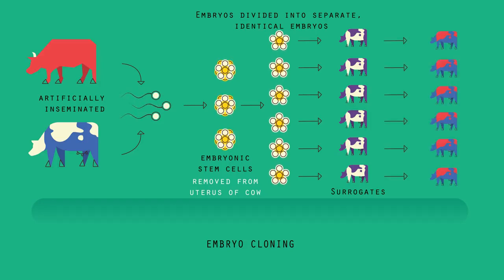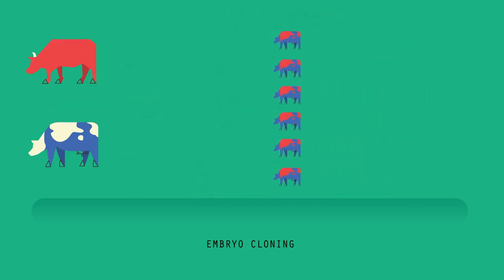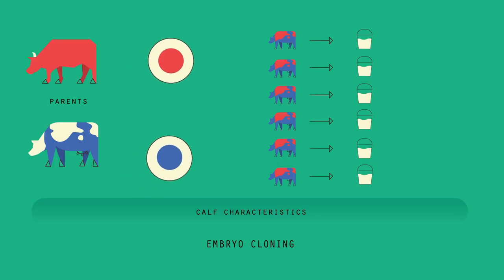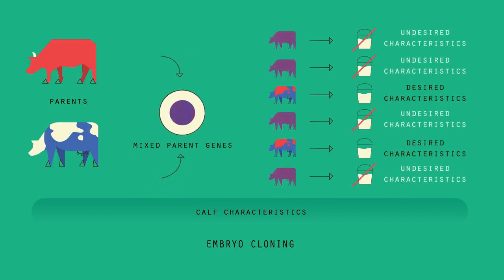The calves will be clones of each other, but not a clone of the mother, due to the bull's sperm. Hopefully the calves will have the characteristics the farmer desires, but as sexual reproduction is involved and the genes from both parents are randomly mixed, there is always the chance that they won't.